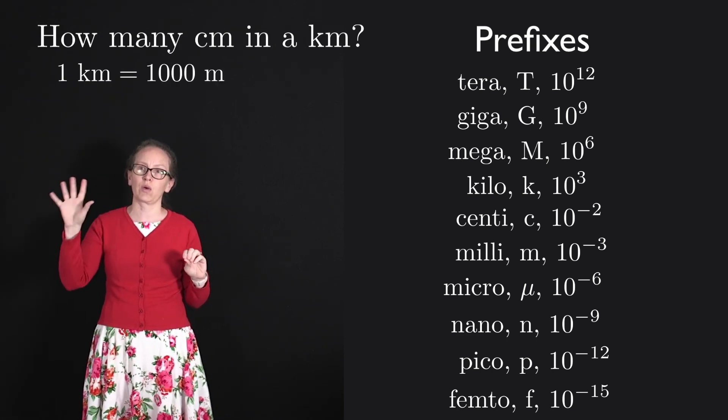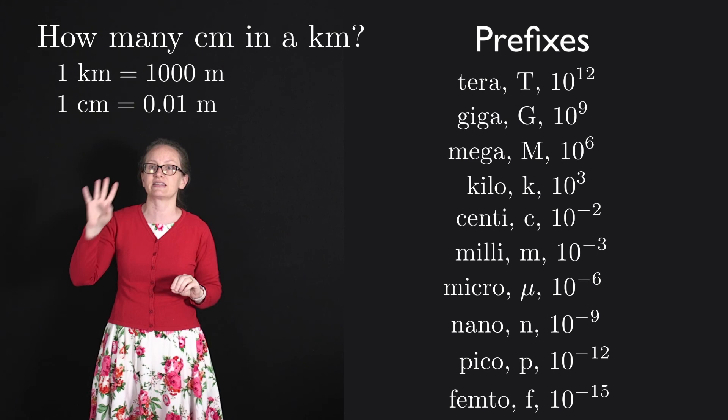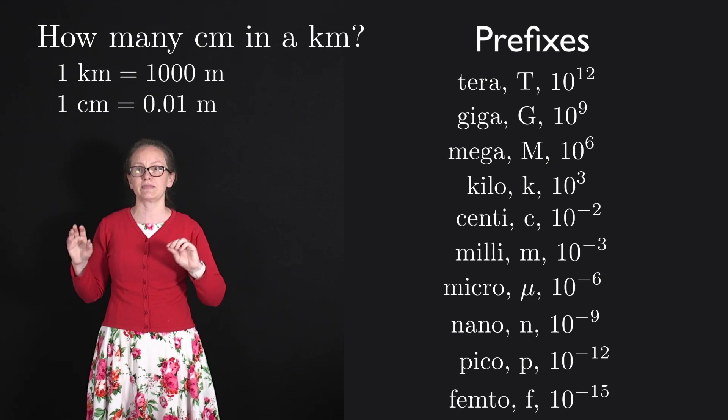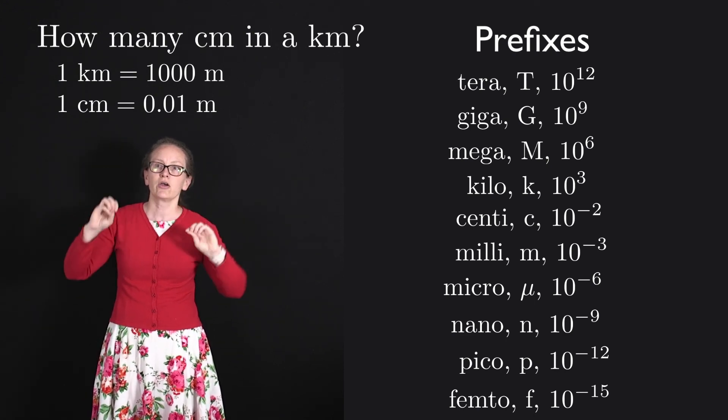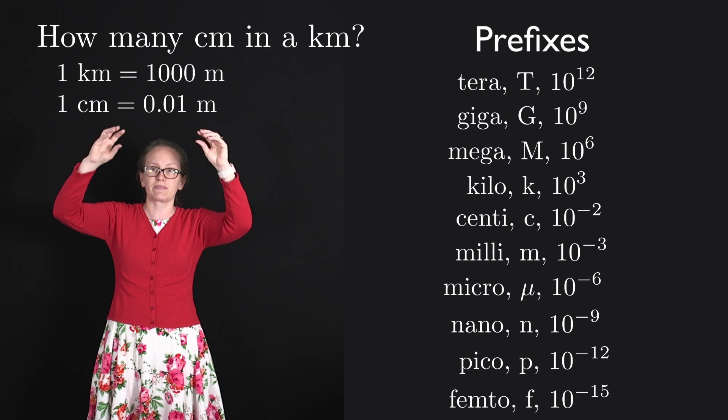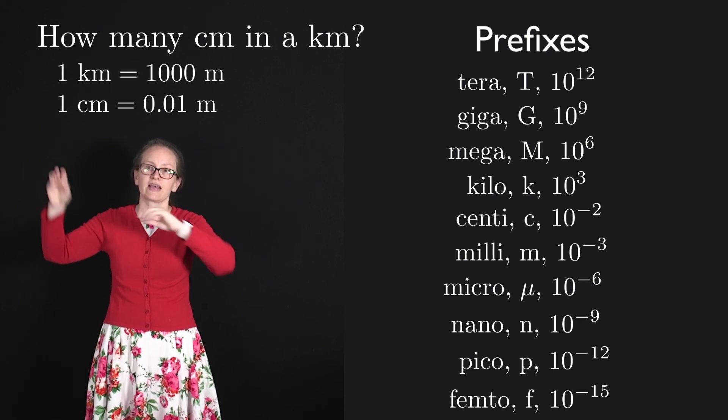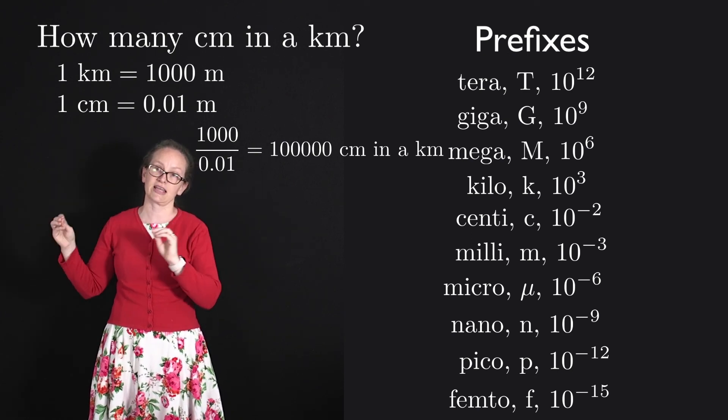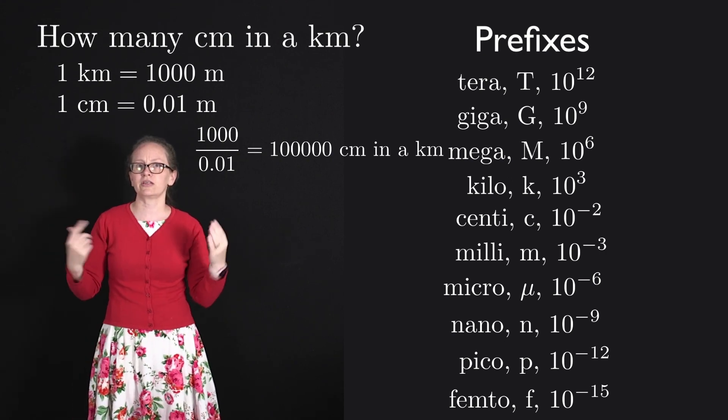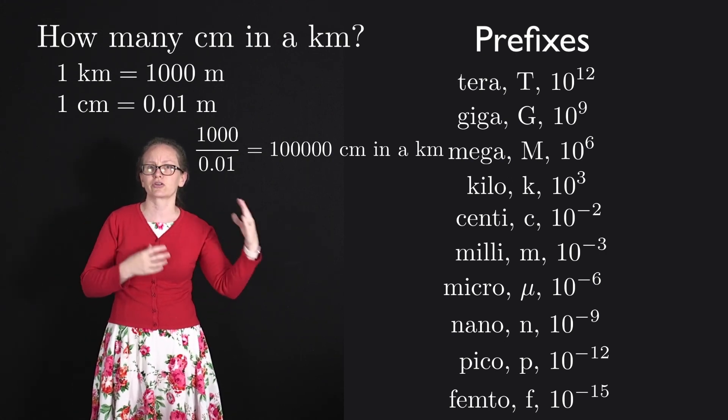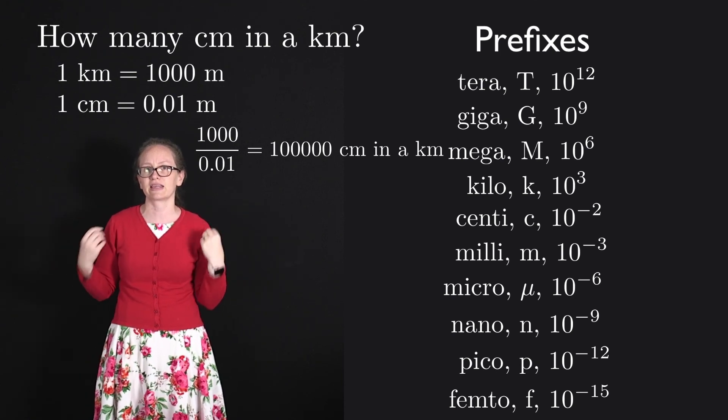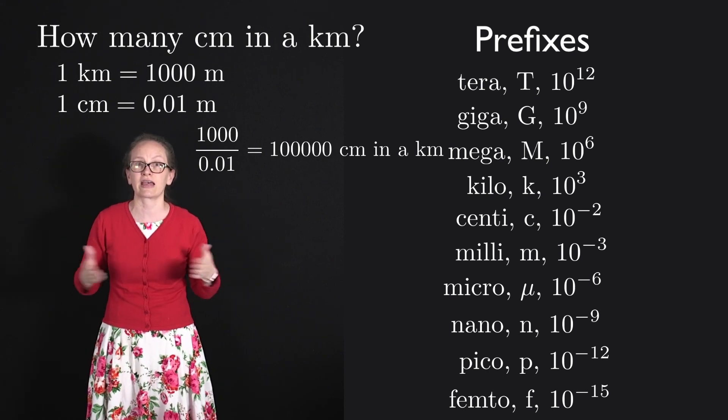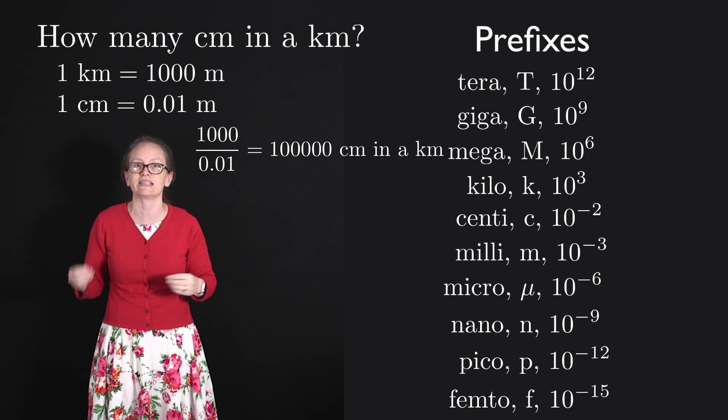1 kilometer is 1000 meters, and 1 centimeter is 0.01 meters. So in order to calculate how many centimeters are in 1 kilometer, we're going to need to divide the 1000 meters by 0.01 meters. And when we do that, we end up with 100,000. So there are 100,000 centimeters in a kilometer. If you are ever confused about whether you need to multiply or divide, just take a step back and think about whether you're expecting a larger number or a smaller number and check that your calculation agrees with that expectation.